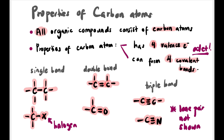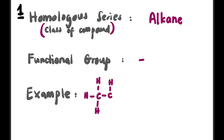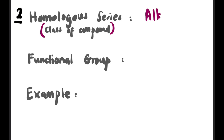Let's get acquainted with the functional groups and homolog series in organic chemistry. In matriculation DK024, there are 16 homolog series in total. The first one is alkane — the class of compound with no functional group, as it only contains carbon and hydrogen. For example, ethane has two carbons; its condensed form is CH₃CH₃, and its skeletal structure is a straight line with two carbons.